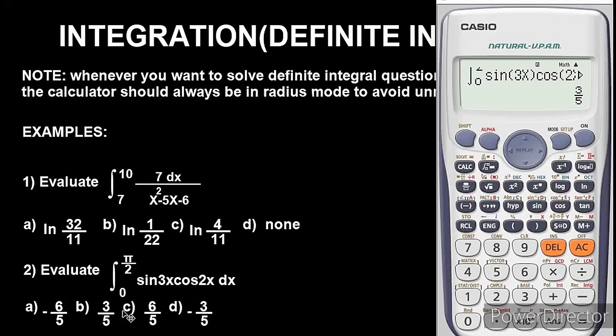It's as easy as that. So guys, this is basically how you can use Casio calculator to solve definite integration, very very simple. Make sure that the calculator is in radian mode before you begin, something very very important.